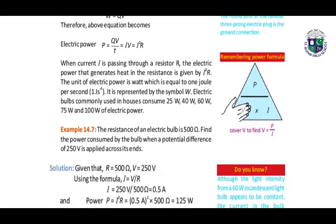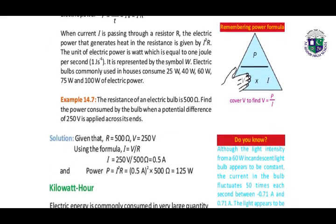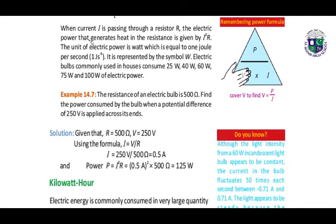When current I is passing through a resistor R, the electric power that generates heat in the resistance is given by I²R. The unit of electric power is watt W, which equals 1 joule per second. Electric bulbs commonly used in houses consume 25 watts, 40 watts, 60 watts.